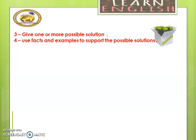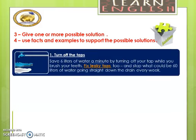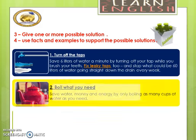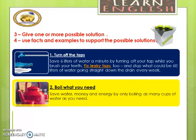Now we are going to give some solutions for this problem. I used three solutions here. First, I should turn off the taps. As we know, you can save six liters of water a minute by turning off the tap while you brush your teeth. Also, you can fix leaky taps and stop what could be 60 liters of water going straight down the drain every week. So, the first solution is to turn off the taps.